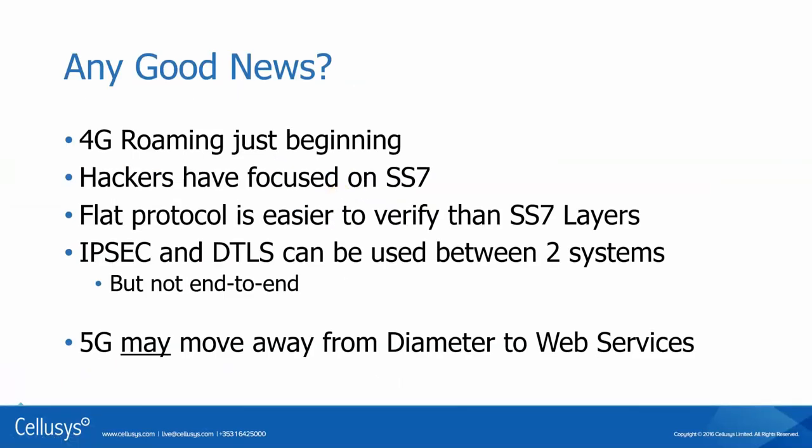Is there any good news? Well, yes. Most of the hacking we see is still in the SS7 network rather than diameter, because the 4G and LTE roaming for data is really just beginning. Most of the time when you roam with your LTE phone, you're actually doing a 3G connection. Other good news is the protocol itself is pretty flat — it's an easy protocol to verify one value against another. Diameter also allows for the use of IPsec and DTLS, two security point-to-point protocols that are useful for knowing who is actually sending you data. Going forward, 5G is probably going to move away from diameter to web services protocols, which are more secure. So 5G may solve some of these problems.